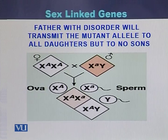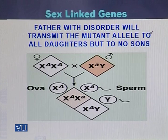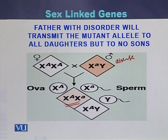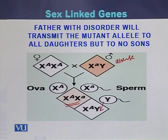If we take the example of sex linked traits and how they inherit from father and mother into the children: a father with a disorder transmits the mutant allele to all the daughters. This father has the disease. He will not transfer the disease to any of the sons, because from the father's sperm, the Y chromosome will be transferred to the son.